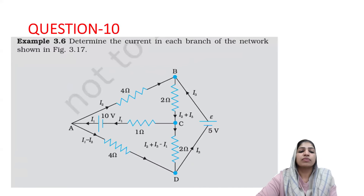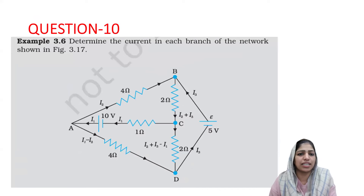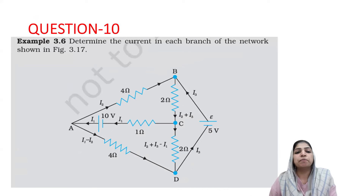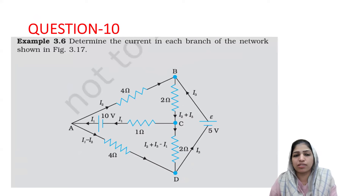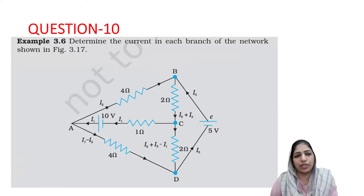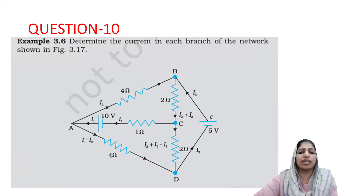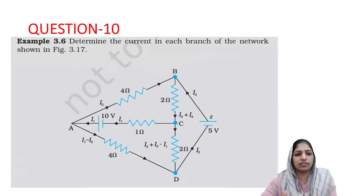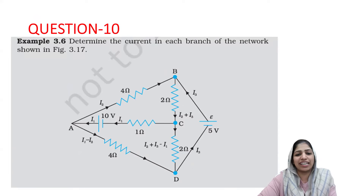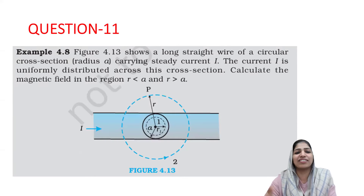Question number 10. The next chapter is current electricity — you need to focus on the gray box problems. The most likely problem involves Kirchhoff's Rules, Example 3.6. However, note that the textbook does not have extensive questions on Kirchhoff's Rules beyond that example.